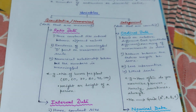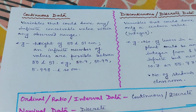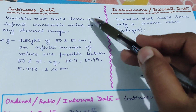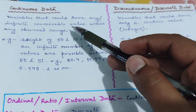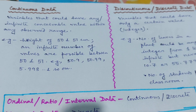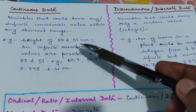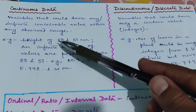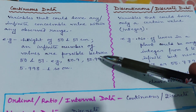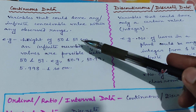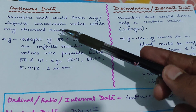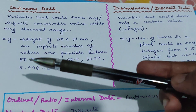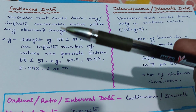These four are the main classifications of biological data. Now, coming to two other types: continuous data and discrete data. Continuous variables can have any or infinite conceivable number of values within an observed range. For example, height between 50 and 51 centimeters could be 50.9, 50.99, 50.998, and so on — infinite values are possible. Height is a continuous variable because it can take any value: an integer, a fraction, or anything.